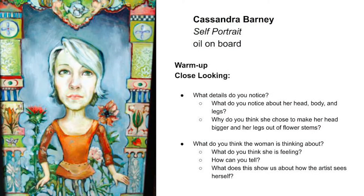First let's look at a work from our permanent collection at the museum. This work is by Cassandra Barney, who is a living Utah artist. What details do you notice? What do you notice about her head, body, and legs? What do you think the woman is thinking about? What do you think she might be feeling? How can you tell? What does this show us about how the artist might see herself? Pause this video and talk about it with your partner.